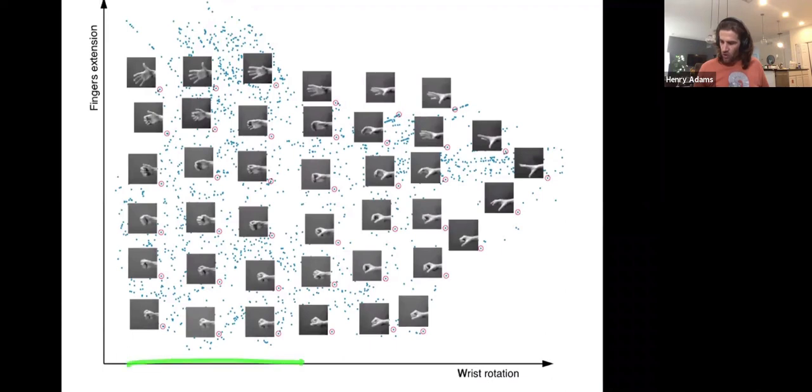The horizontal axis is measuring how rotated is the wrist. So on the right, the wrist is flat, whereas on the left, the wrist is rotated in this more vertical way. I shouldn't move my fingers, but on the left, the wrist is rotated, and then on the right, the wrist is flat. Now the vertical axis is some measure of how extended are your fingers. So at the top, the fingers are very extended. And then at the bottom, the fingers are retracted all the way into a fist.